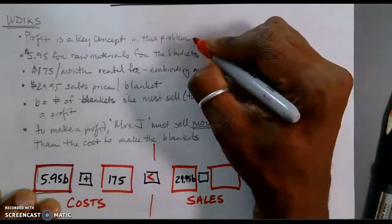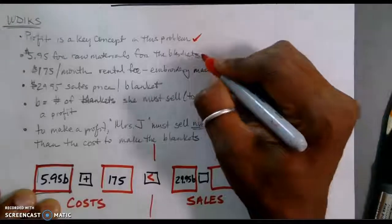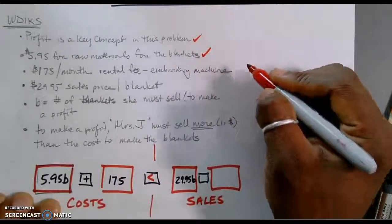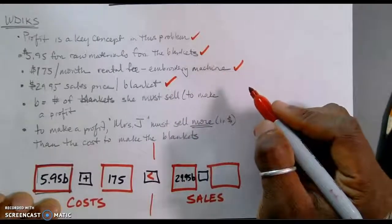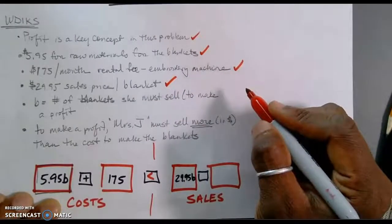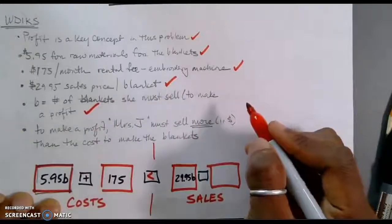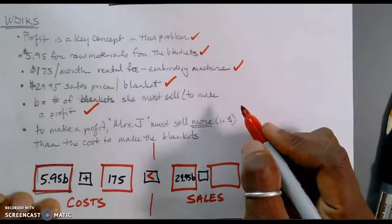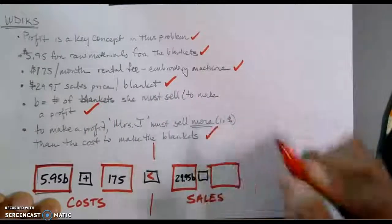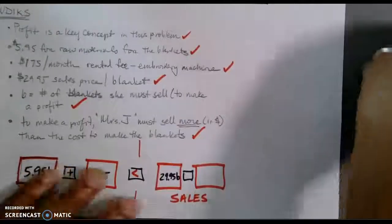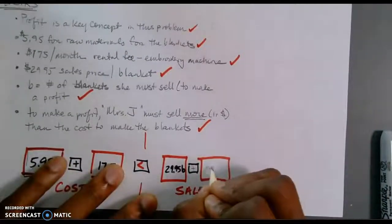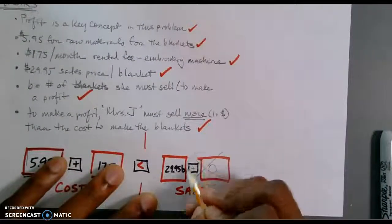We talked about profit. That's done. I've already associated $5.95. I've already put down $175. I have already worked out my sales price. We've dealt with our variable. And we know that in order to make a profit, which ties to that inequality symbol directly, we've already done that. So, in this case, this is going to be plus zero or just nothing at all.